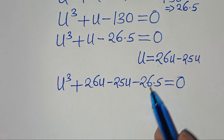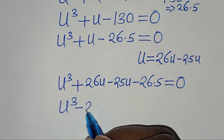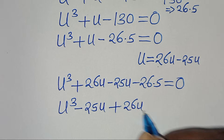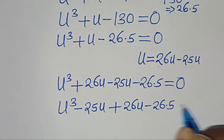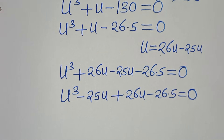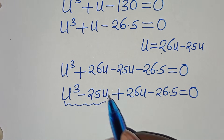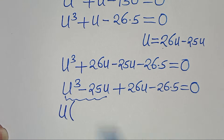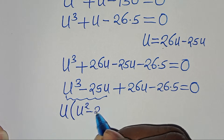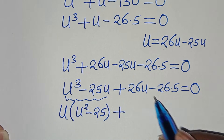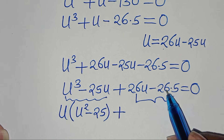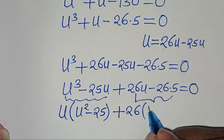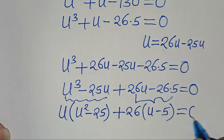Now, from the first part here, u is common, so we can factor out u, so that we have u into the parenthesis — this is u to the power of 2 minus 25 — then plus, from the second part here, 26 is common, so we can factor out 26 into the parenthesis — this is u minus 5 — equal to 0.